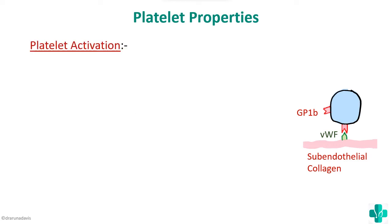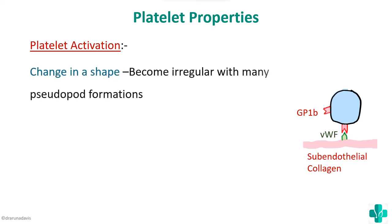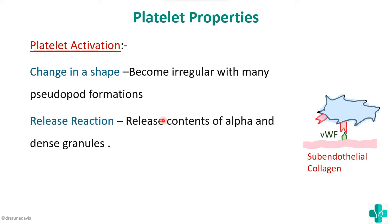The second property is platelet activation. When the platelet binds to the von Willebrand factor, there is a sudden change in shape: it changes from disc-shaped to irregular with many pseudopod formations. Not only is there a change in shape, but there is also a release of granules — this is called the release reaction. Alpha granules release fibrinogen and von Willebrand factor, while dense granules release ADP, ATP, serotonin, and thromboxane A2.